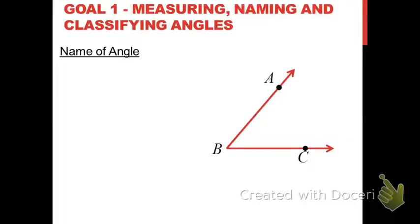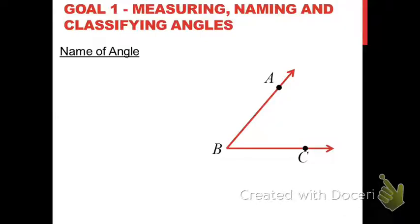Of those three things we're going to do in goal one — measuring, naming, and classifying angles — we're going to start off with talking about how you name an angle. Now we've talked about how you name segments, rays, and lines, and there was very specific notation that went along with it. The same thing is true whenever you name an angle. There's notation that goes along with it that you've got to get correct, and there's a certain structure to the names you've got to understand as well.